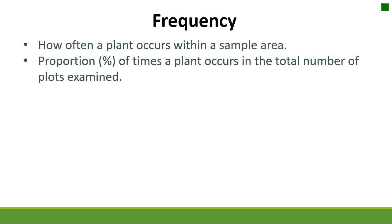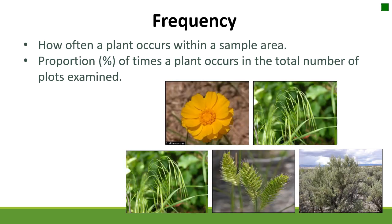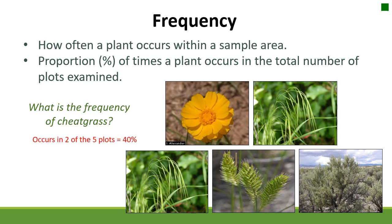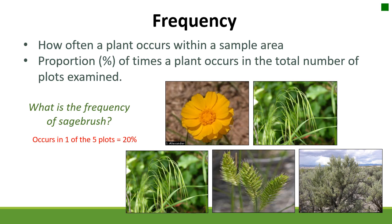Frequency is one method used on rangelands. It's a measure of how often a plant occurs within a certain sample area — it's essentially present/absence type data. From that we can get the proportion of time it occurs over the whole number of plots examined. For example, looking at these five sample areas, cheatgrass is present in two out of five observations, so the frequency of cheatgrass is 40%. Sagebrush occurs on one of the five plots observed, so the frequency of sagebrush is 20%.